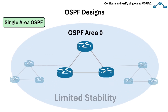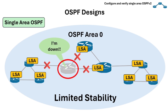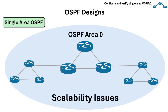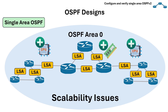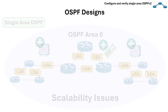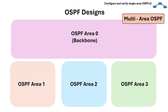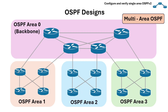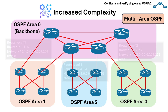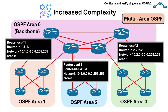For disadvantages, first is limited stability — a single topology change in one part of the network can affect all routers in the entire single area. Another is scalability issues: in large networks, all routers must possess a large number of LSAs and maintain a complete LSDB, leading to high CPU and memory usage. Another OSPF design is multi-area OSPF, recommended for enterprise-level networks to segment the network into smaller, more manageable domains or areas. Its disadvantage is increased complexity — the design and configuration are more complex, requiring experienced network administrators.